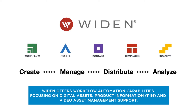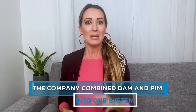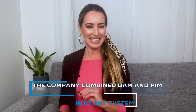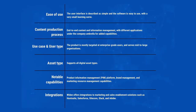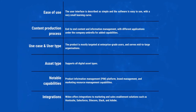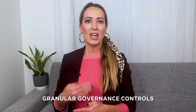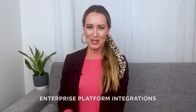Weiden offers workflow automation capabilities focusing on digital assets, product information, PIM, and video asset management support. Weiden started as a standalone DAM solution, and recently the company combined DAM and PIM into one system. The solution offers capabilities to automate and simplify the digital asset management and content production process from creation, review, approval, and distribution. Weiden is a sophisticated DAM solution that can meet the complex needs of enterprise organizations with end-to-end asset management support. It offers features such as AI metadata support, version control, granular governance controls, and enterprise platform integrations with creative tools.